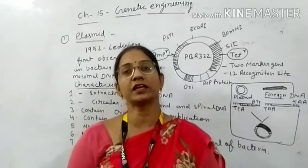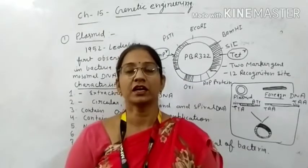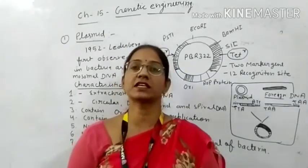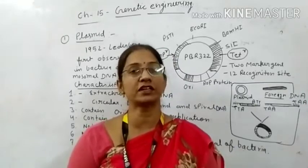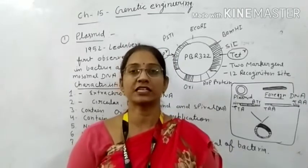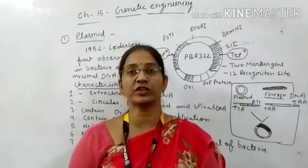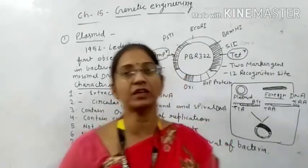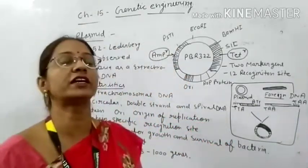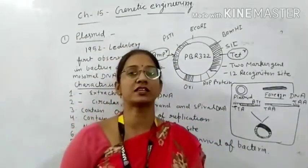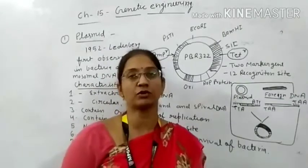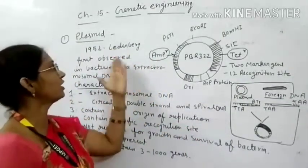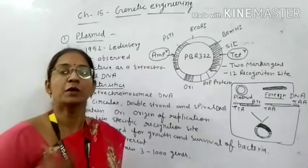First, we will talk about the cloning vector. There are three cloning vectors which we need to study: Plasmid, Cosmid, and Bacteriophages. We will discuss what qualities they have and how to use them as cloning vectors. The first cloning vector is Plasmid.